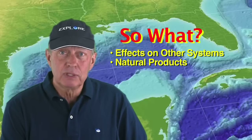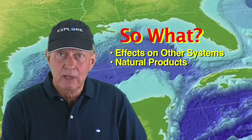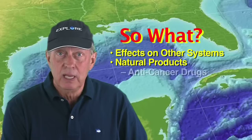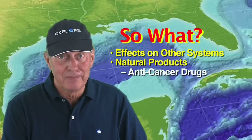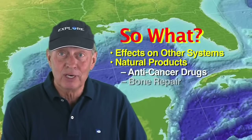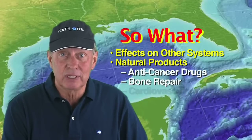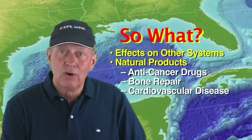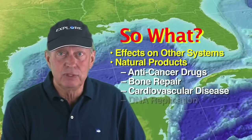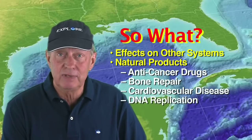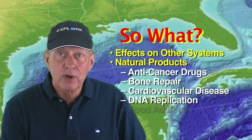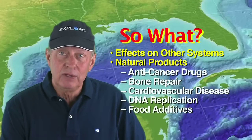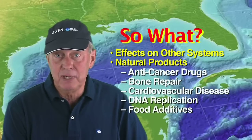Since most people know someone who has been affected by cancer, the fact that new species may be sources of unique anti-cancer drugs can be a powerful answer to 'so what.' Other examples include organisms that are used to treat bone injuries and cardiovascular disease, organisms that produce enzymes used for copying DNA in scientific studies and criminal investigations, and products from deep-sea organisms that are used to make sweeteners for food additives.